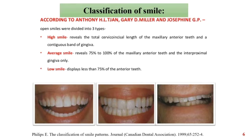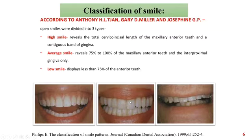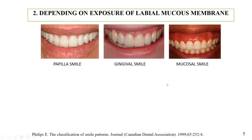Coming on to the classification, according to Anthony, Gary, Miller and Josephine, smiles are classified into three broad types: high smile line, medium smile line, and low smile line. The high smile line reveals the total cervical incisal length of the tooth and also reveals a band of the interproximal papilla. The lower smile line displays only 75% of the length of the anterior tooth. Depending on the exposure of the labial mucous membrane, smiles can be classified as papillary smile, gingival smile, and mucous smile.